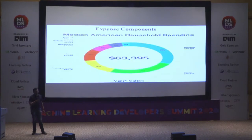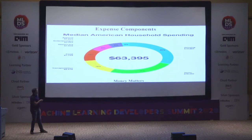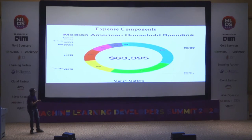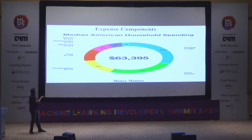Before we deep dive into the models, we need some foundational context. Here's an example from American statistics showing how median American household spending is divided across expense components: housing is 31%, taxes is 26% — which is similar for India — and then transportation, which is also increasing for India's middle class. Food, other expenses, and healthcare follow, with healthcare being less in India compared to America.